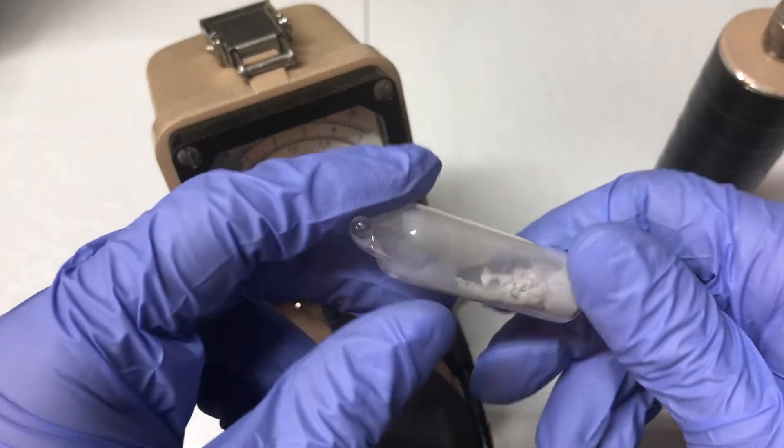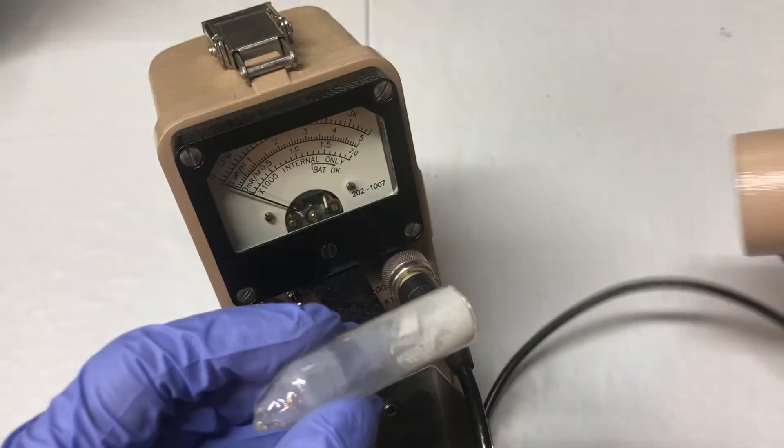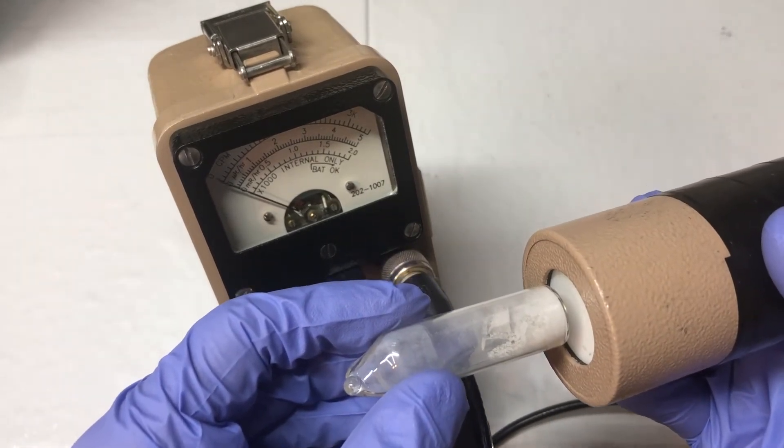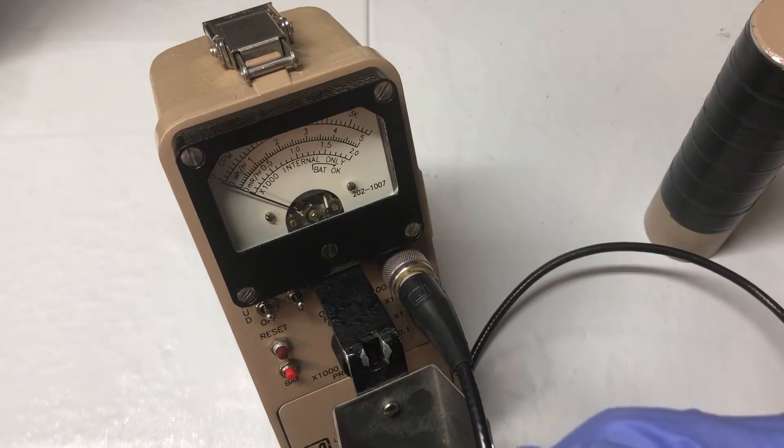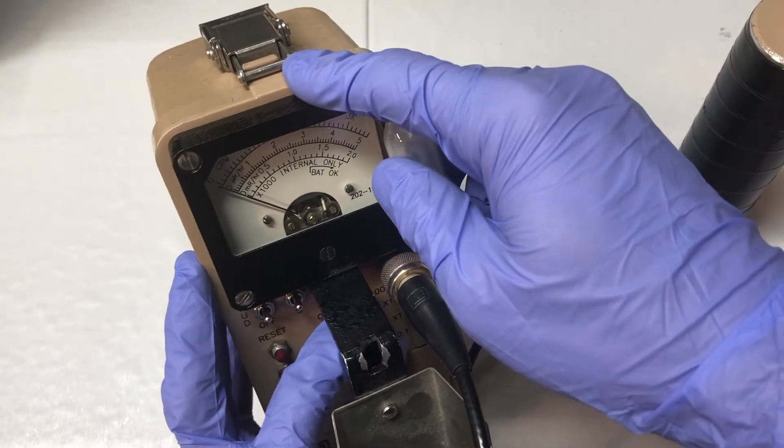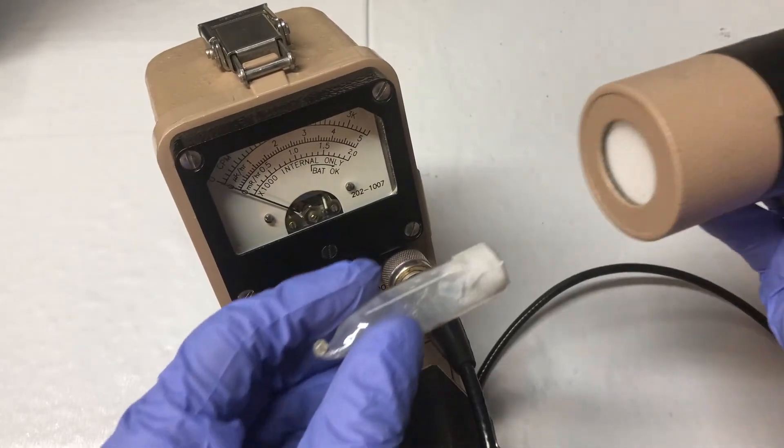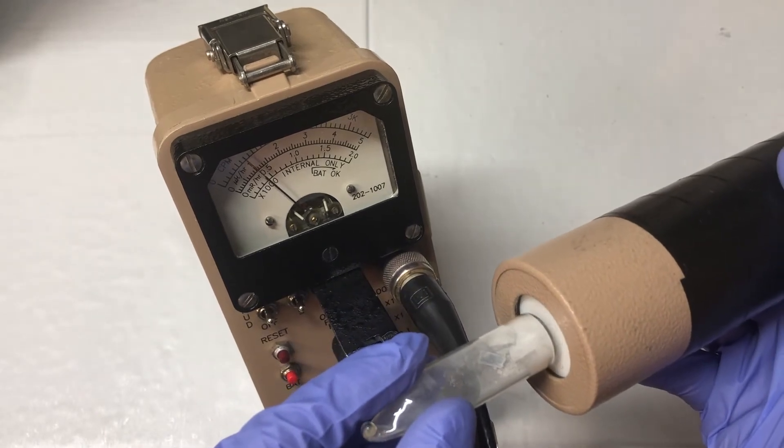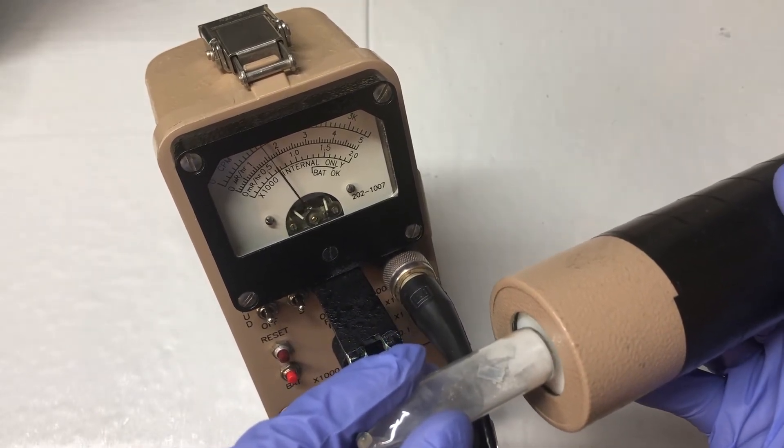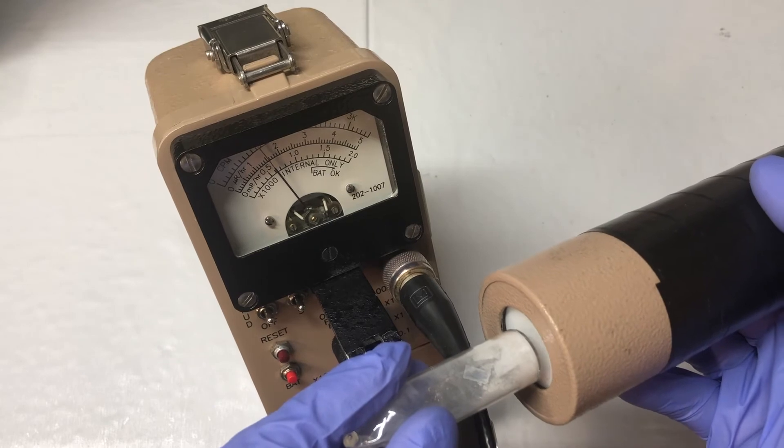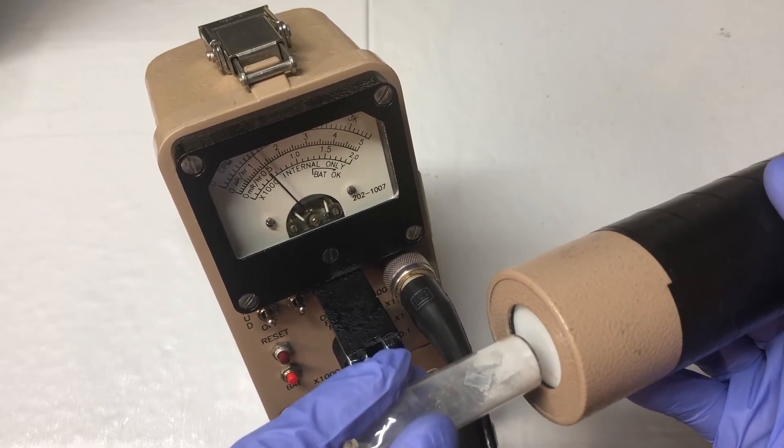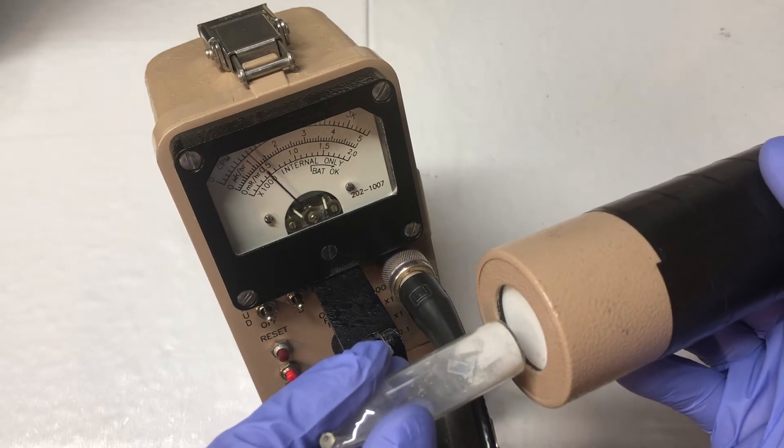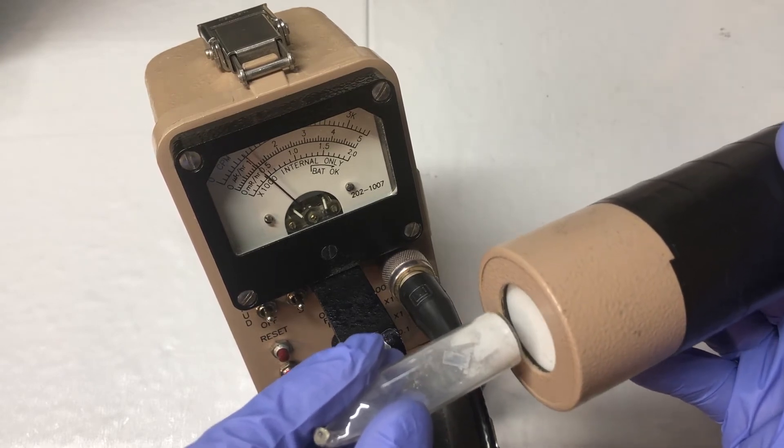Here we have a vial of thorium dioxide made in a previous video. It barely moves on times 100, so let's move it down to times 10. Now we're sitting around 8 to 9,000 counts per minute.